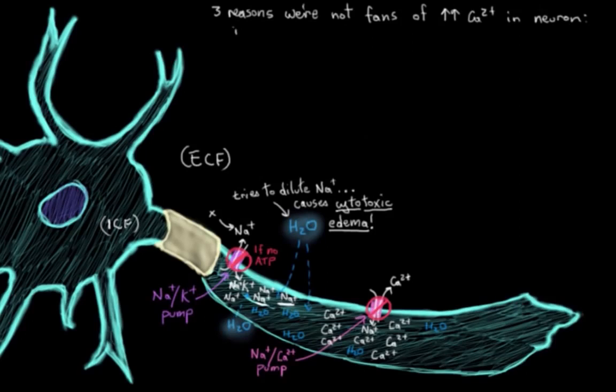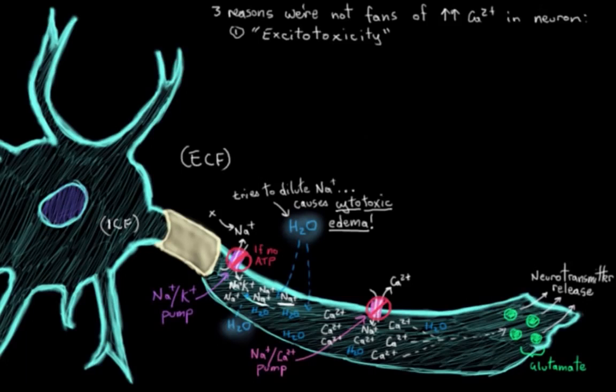So for one, and up here we'll just call this excitotoxicity. And you'll see what I mean in a second. So high calcium in the cell causes messengers like glutamate to be released from the end of the neuron. So these messengers are collectively called neurotransmitters. So you get this neurotransmitter release because of the high calcium. And this neurotransmitter then diffuses off and excites other neurons because it's an excitatory neurotransmitter.